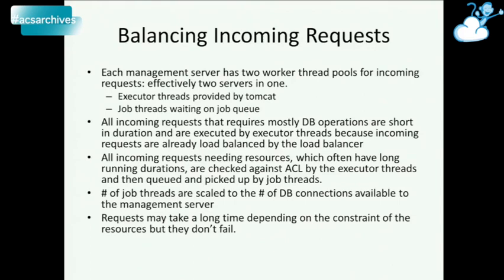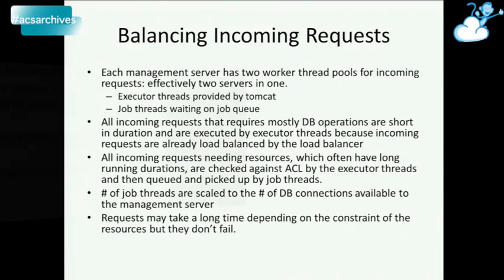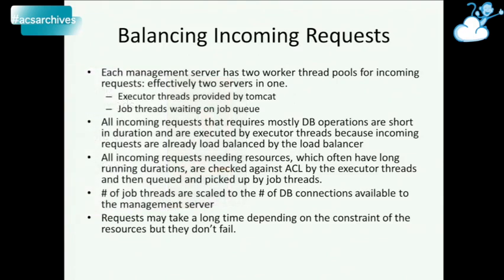This is how we work on our scalability problem. One source of load on the system is the number of requests that come in. On the management server we have two sets of worker thread pools. One is provided by Tomcat — pretty much anyone who does app servers knows that. We also have our own job threads waiting on the job queue. If incoming requests are mostly DB operations — which is often the case when serving up a UI — these are executed by executor threads and returned back to the client, because most requests are already load balanced by the load balancer.